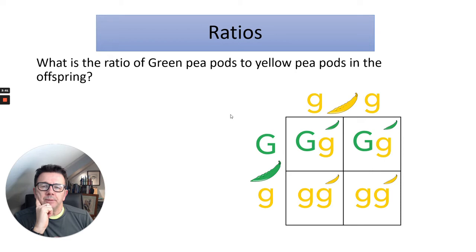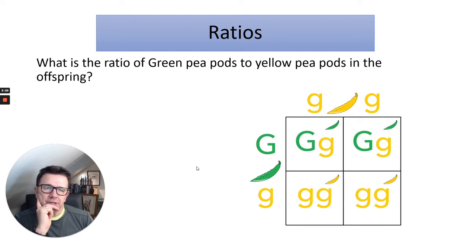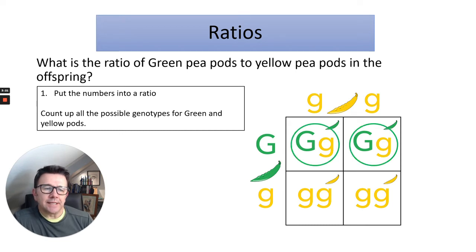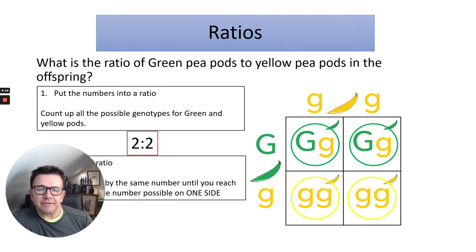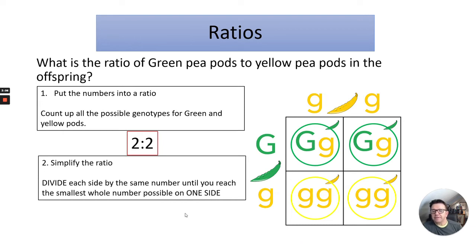Here's a little problem: what is the ratio of green pea pods to yellow pea pods in the offspring? This is a Punnett square looking at G — capital G is dominant, lowercase g is recessive. Put the numbers into a ratio; count up all the possible genotypes for green and yellow pods. We've got two green and two yellow, so that would be shown as two to two. We can further simplify that — divide each side by the same number until you reach the smallest whole number possible on one side. In this case, it would be one to one.